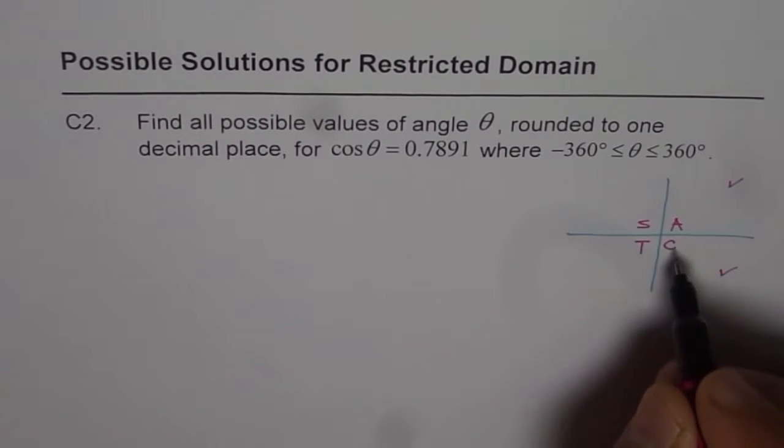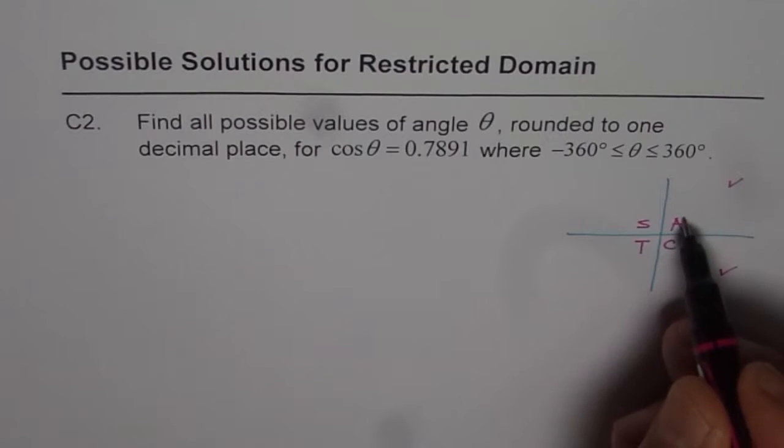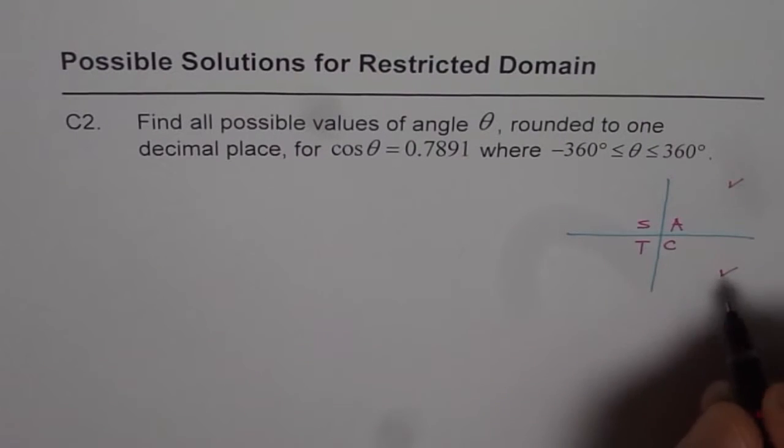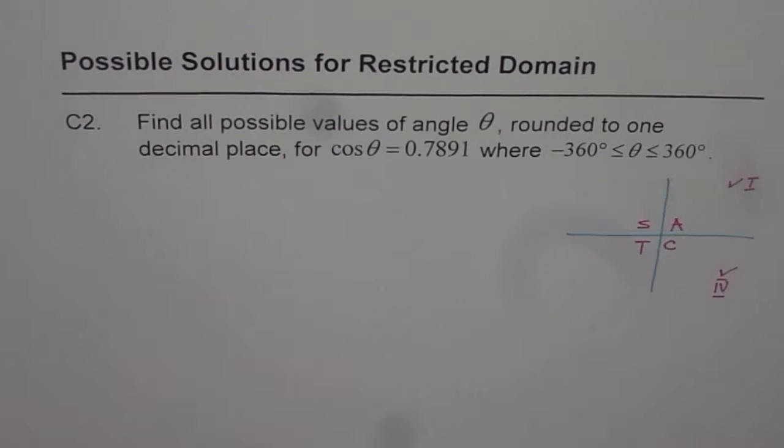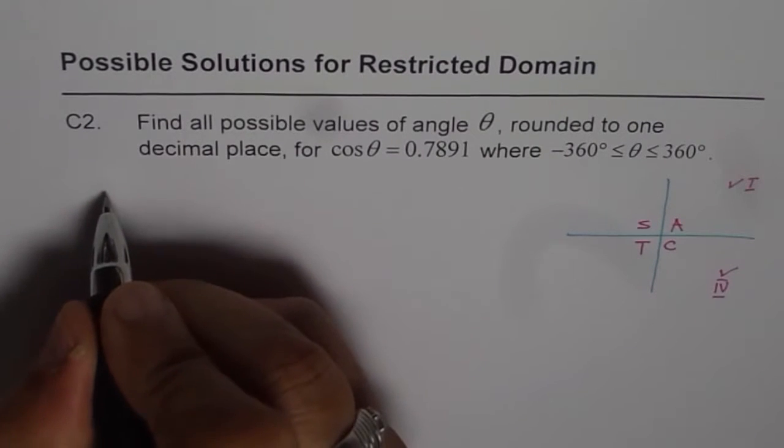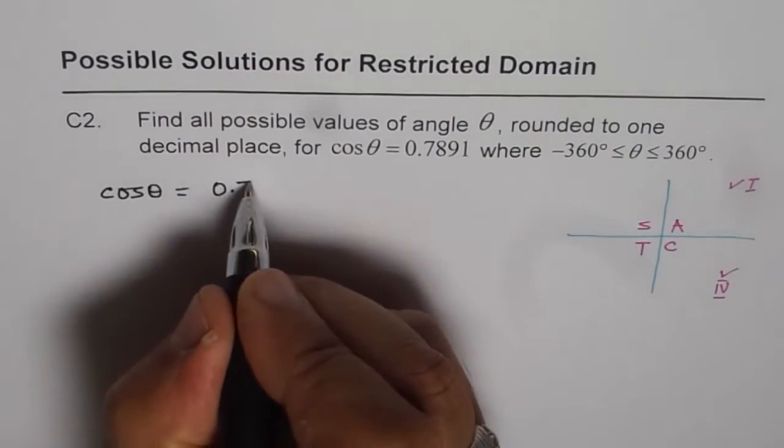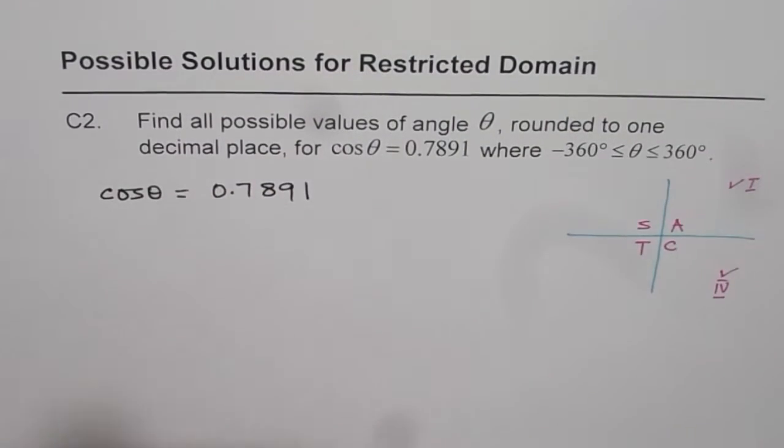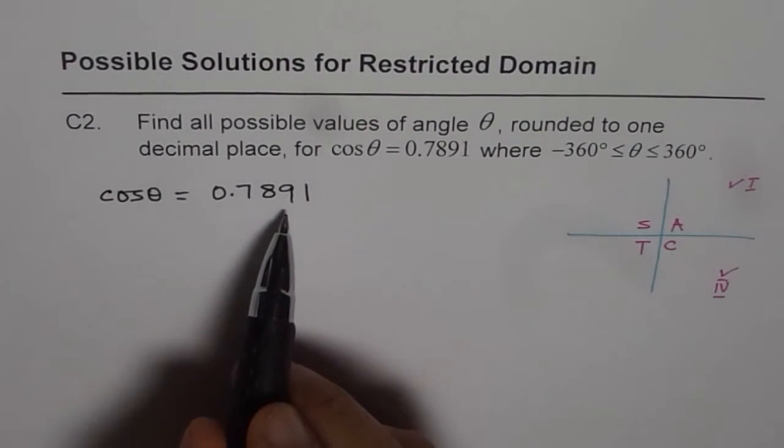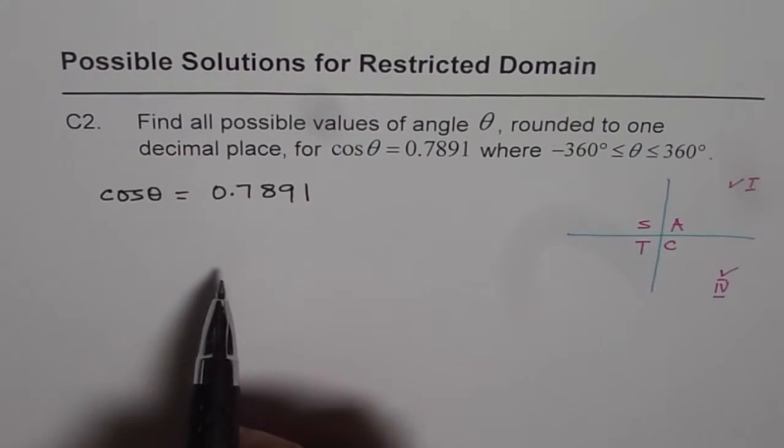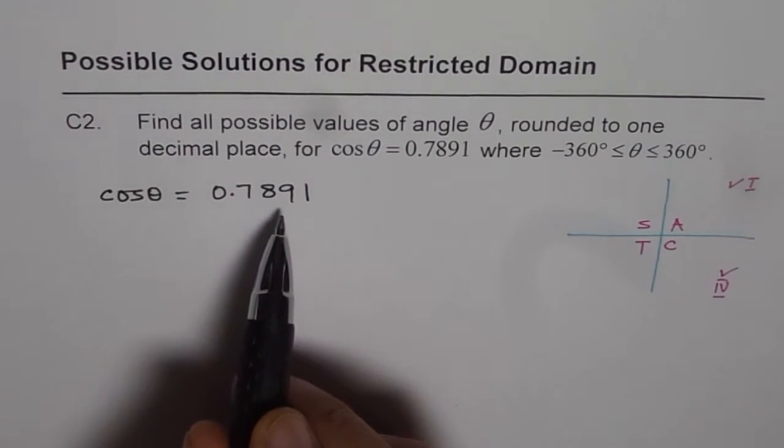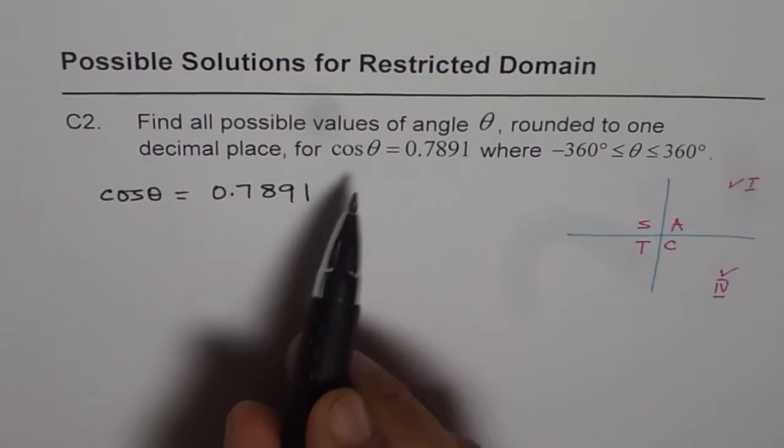So cos is positive in quadrant 4 and all are positive in quadrant 1. So we are looking forward for two solutions at least for theta. So to start with, whenever you are trying to find the angle theta, given trigonometric ratio, in this case we are given cos theta equals to 0.7891.